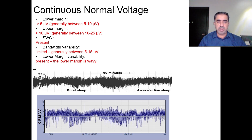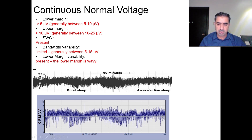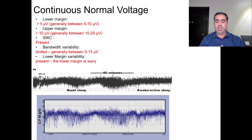Looking at bandwidth variability, you can see some variability in the band width, but it is limited — generally not exceeding 5 to 15 microvolts. The last item is lower margin variability: look at how the lower margin varies, indicating that lower margin variability is present and it is wavy. So the five things to look at are: upper margin, lower margin, sleep-wake cycle, bandwidth variability, and lower margin variability.